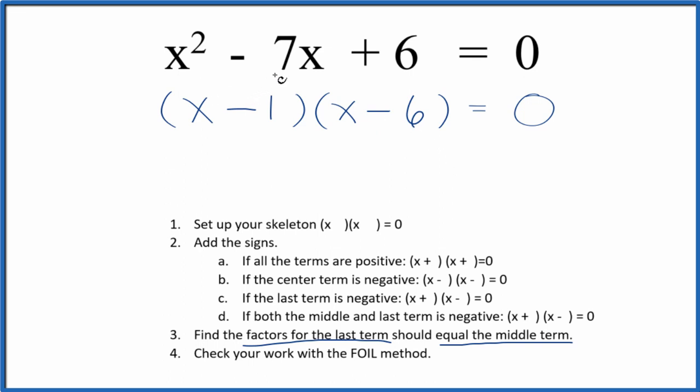We've factored this equation: x² - 7x + 6. Negative 1 plus negative 6 gives us the negative 7. We should check our work with the FOIL method.